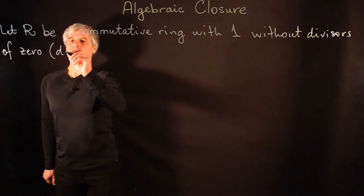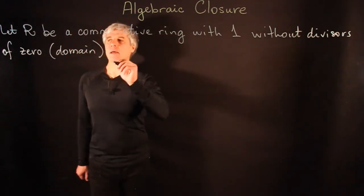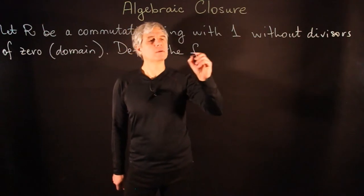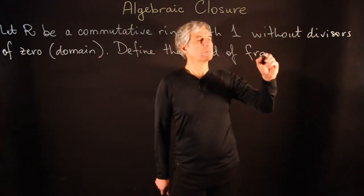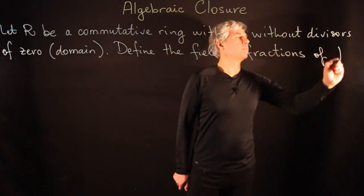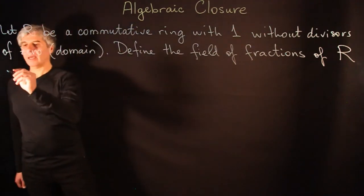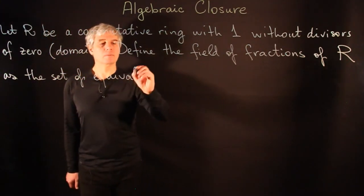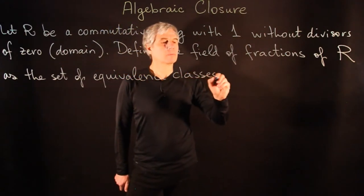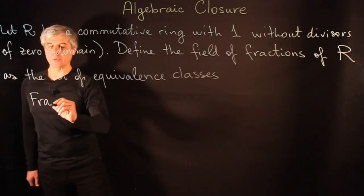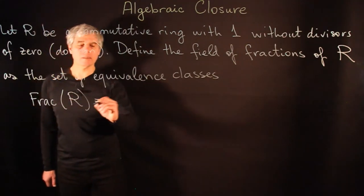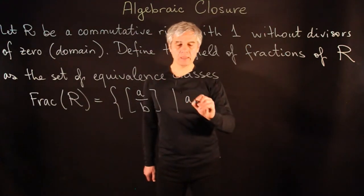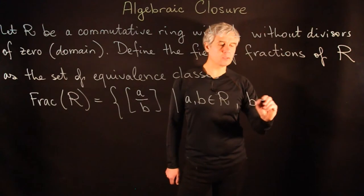Such rings are also called domains, and we define the field of fractions of R as the set of equivalence classes of fractions. This set is the set of equivalence classes of fractions A over B, where A and B belong to R and B is not equal to 0.